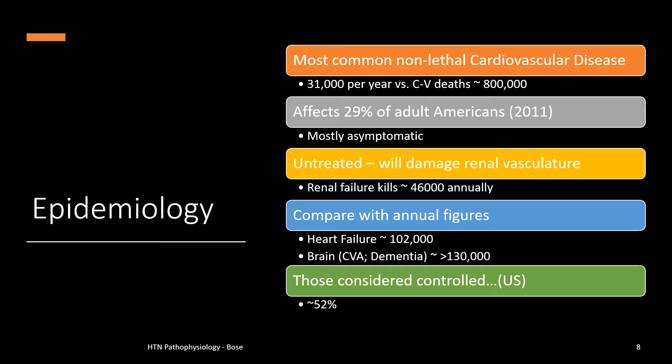Compare these numbers with heart failure, which kills about 102,000 people annually, and brain involvement through CVA and dementia, which accounts for about 130,000 annually. Only about 52% of the diagnosed hypertensive population in the United States is considered controlled. Hypertensive emergency epidemiology is relatively less frequent and associated with certain underlying triggers, so its detailed discussion is held for now.